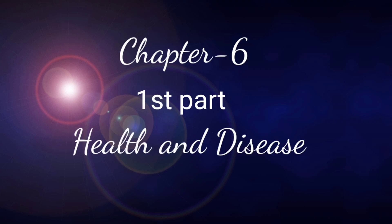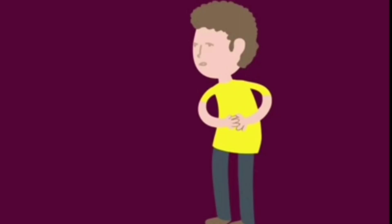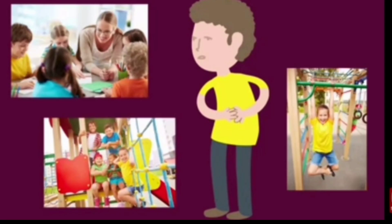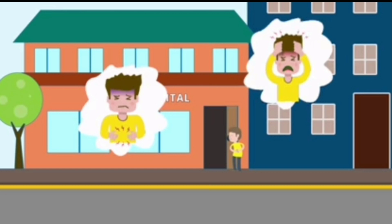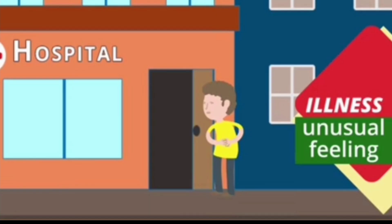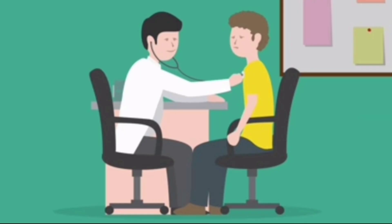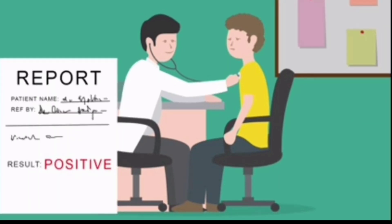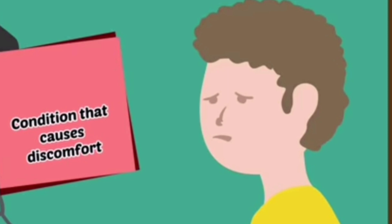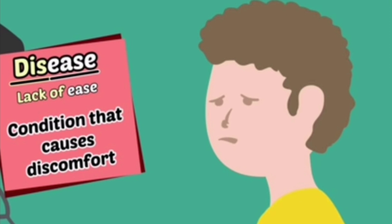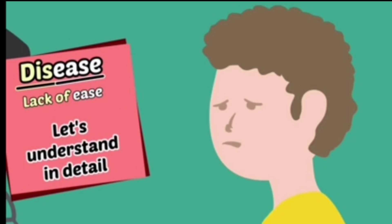Good morning, dear students. Today we will learn Chapter 6: Health and Disease. Consider a situation when we feel we are not able to perform a daily activity smoothly. We decide to visit a doctor because our body is exhibiting certain unusual signals. This unusual body feeling is called an illness. After waiting, we describe our symptoms to the doctor, who suggests some tests and confirms our medical condition. This actual condition that causes discomfort is what we call a disease.